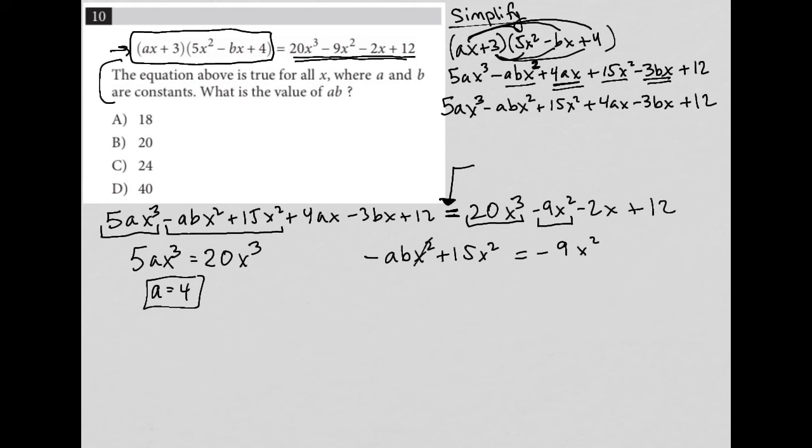Which in essence, I could get rid of the X squared even and say negative AB plus 15 has to equal negative nine. Because it's really all about the coefficients in this case. I didn't really need even to write the X cubed there. So how does that work? Well, I can subtract 15 from both sides.